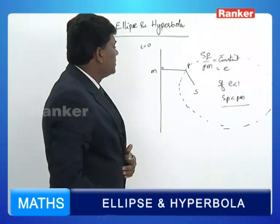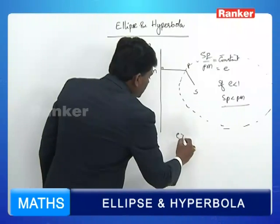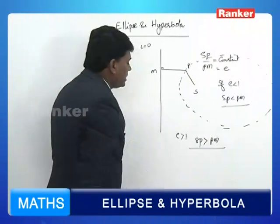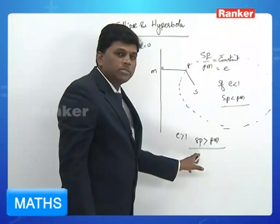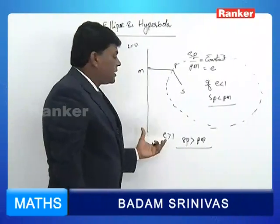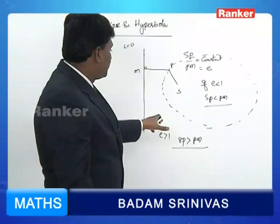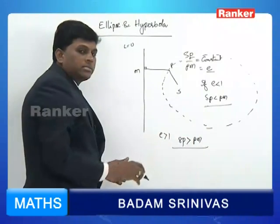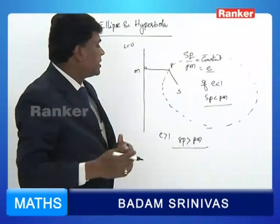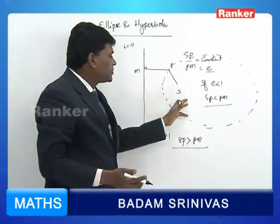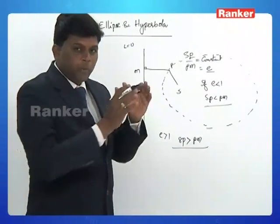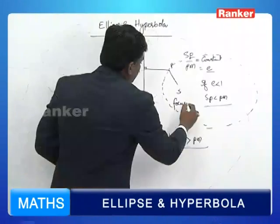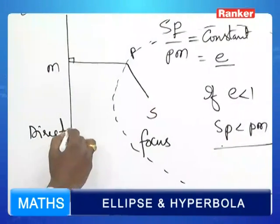In a similar way, if e is greater than 1, the locus is a hyperbola, in which the variable point P is closer to the fixed line compared to the focus. So SP by PM equals eccentricity e — based on e less than 1 or greater than 1, we define the locus as ellipse and hyperbola respectively. In both definitions, this fixed point is called the focus and the fixed line is defined as the directrix of the conic section.